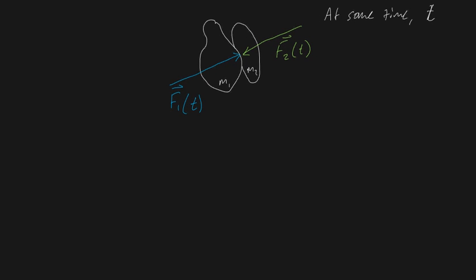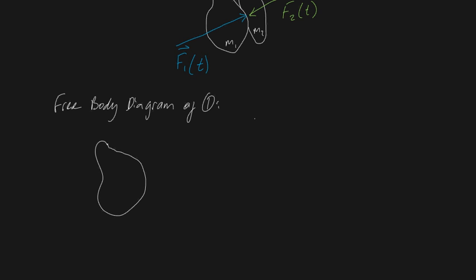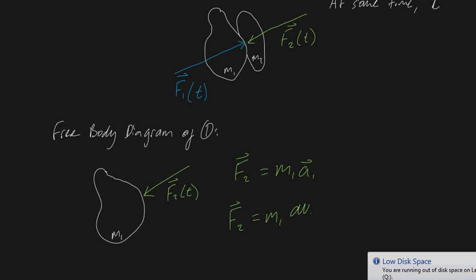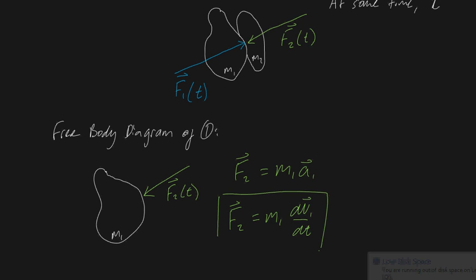Now let's consider the free body diagram of each individual object. For object 1 of mass m1, there's only one force acting on it, and that's due to the second object — that's the green force F2, which is a function of time. From Newton's second law, the sum of forces equals mass times acceleration, so force 2 equals m1 times dv1/dt.